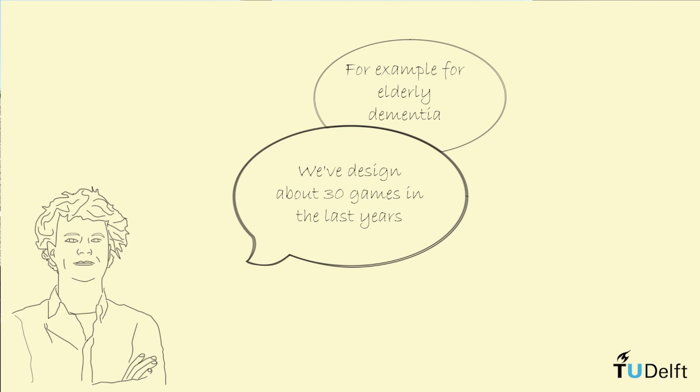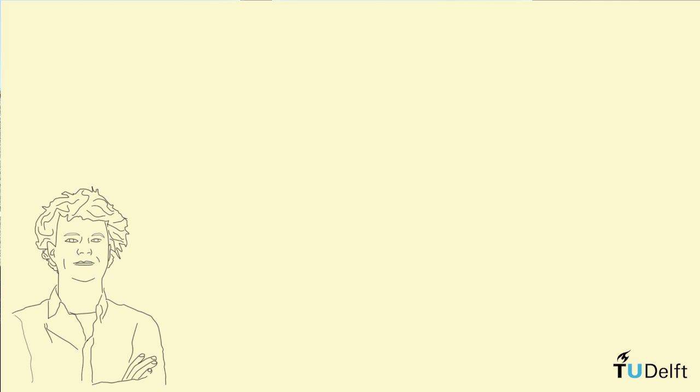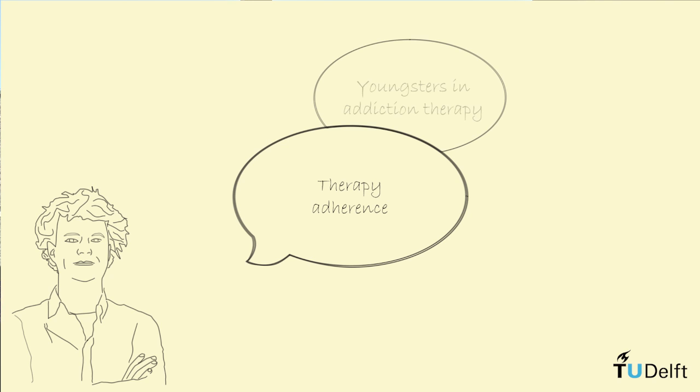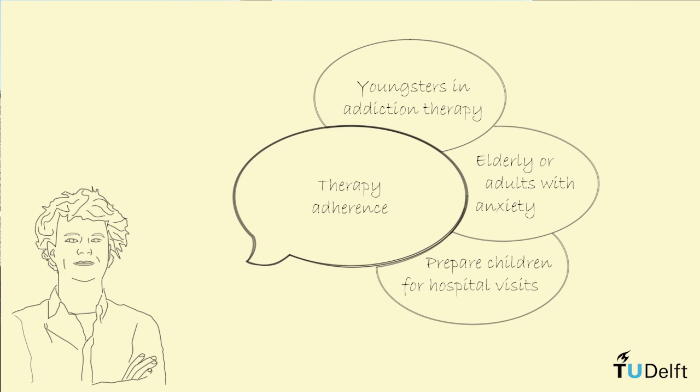It was projection on a coffee table in care homes for people with dementia. Some games were projected like swimming dolphins. And if you moved your hands, the dolphins would come to your hands. And it was exactly this kind of movement, the physical activity of these elderly people, that was our aim for transfer effects. We also made a lot of games on therapy adherence. For instance, youngsters in addiction therapy or adults with anxiety problems. We made games to prepare children for hospital visits.